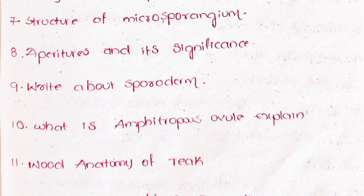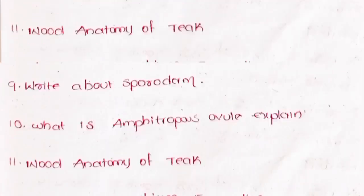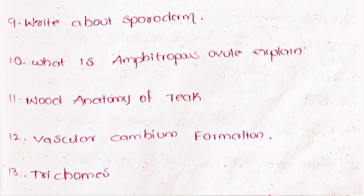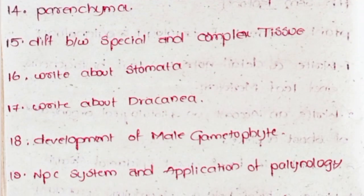11. Wood anatomy of teak. 12. Vascular cambium formation. 13. Trichomes. 14. Parenchyma. 15. Difference between simple and complex tissue.